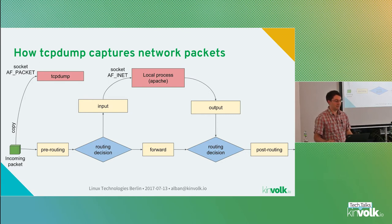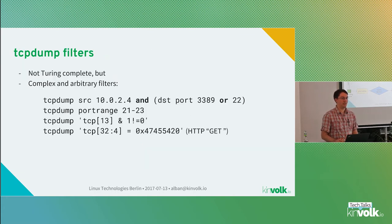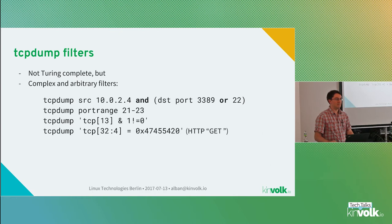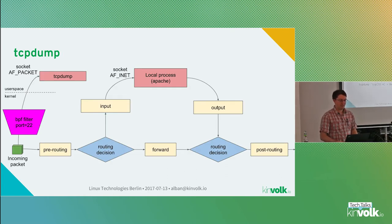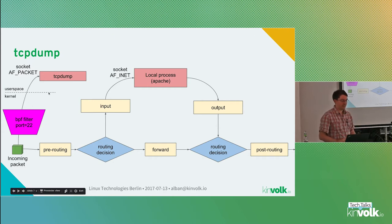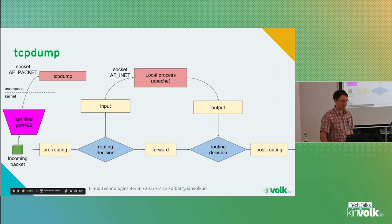To do that, tcpdump creates a socket of type AF_PACKET. That's basically a way to tell the kernel: I want to receive all the packets on this network interface. Most of the time we don't necessarily want to get all the packets, but only some packets we're interested in — for example, on a specific TCP port. Because there might be a lot of traffic, getting everything can be quite slow. In tcpdump you can have quite complex filters — Boolean expressions to say 'this IP or not this IP' — and this is kind of arbitrary code.